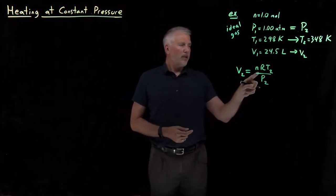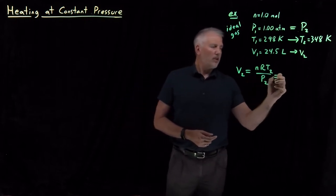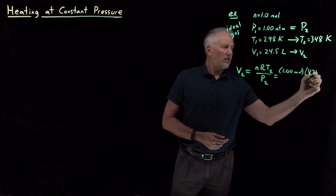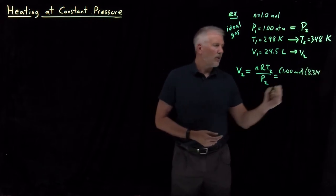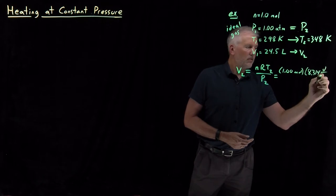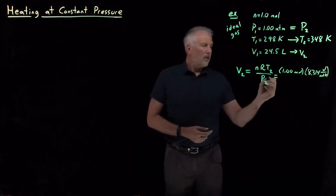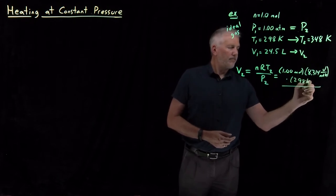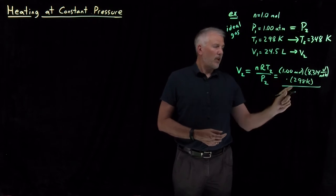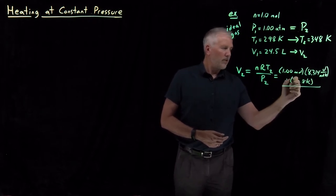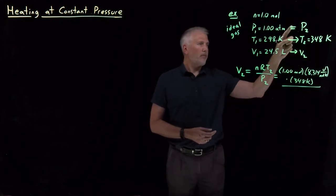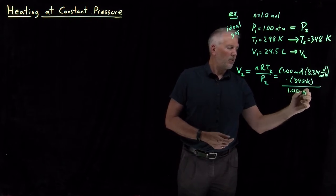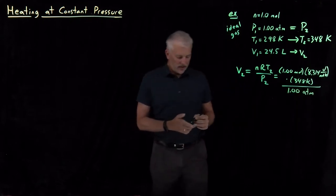If I know my final temperature and final pressure, V₂ equals—I have one mole of gas, the gas constant is 8.314 joules per mole Kelvin, multiplying in the numerator by... I'm sorry, not 298 Kelvin, the final temperature is 348 Kelvin, and divide by the final pressure which is the same as the initial pressure, which is one atmosphere.